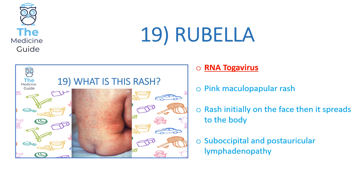Rash 19 is rubella, caused by the RNA togavirus. It is a pink macular papular rash initially presenting on the face and then spreading to the rest of the body. A key feature of rubella is that patients also present with suboccipital and posterior lymphadenopathy — enlarged lymph nodes behind the ear and on the back of the head near the occipital region.